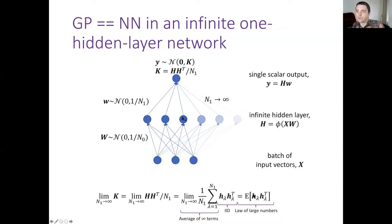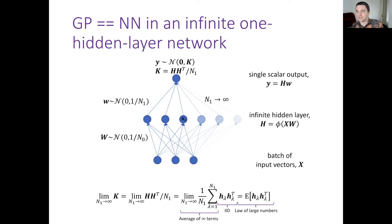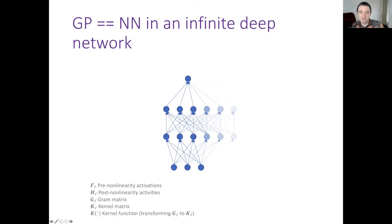It turns out this expectation can actually be computed in closed form relatively easily using results from Cho and Saul (2009). There's a somewhat complicated equation involving signs and cosines, but fundamentally it's something reasonably simple that you can evaluate and put in the inner loop of a deep learning system, fast enough to work in that setup.